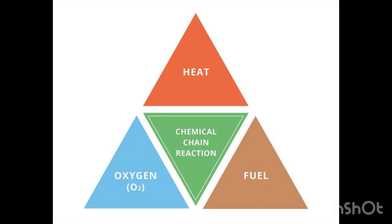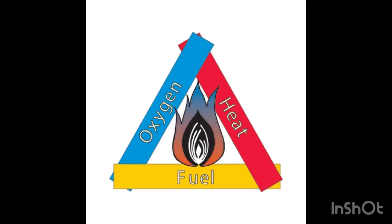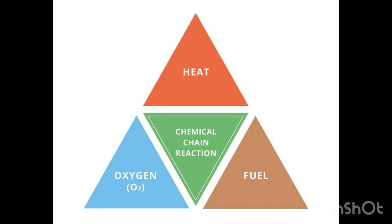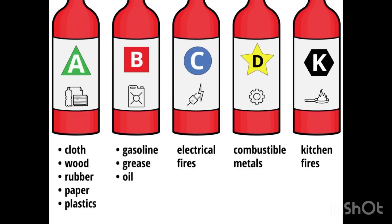Types of fire extinguishers and their uses. For Class A fire — wood, paper, and textiles — you can use water, foam spray, and ABC powder. You can also use carbon dioxide. Wet chemical you can use as well.